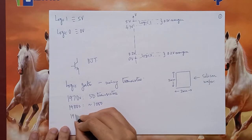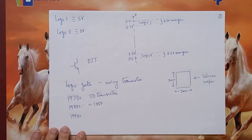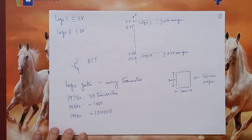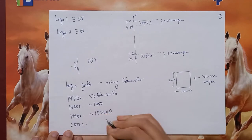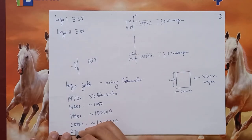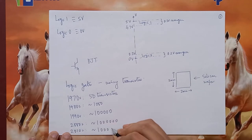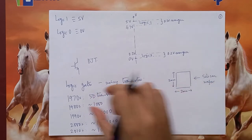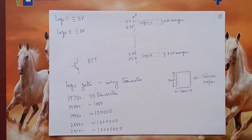In the 1990s, the number of transistors on the same area increased to 100,000. In the 2000s it increased to a million, and in the 2010s it further increased to more than 10 million. The question is: within a span of 40 years, how did we go from fitting 50 transistors all the way to 10 million? How did this growth happen?